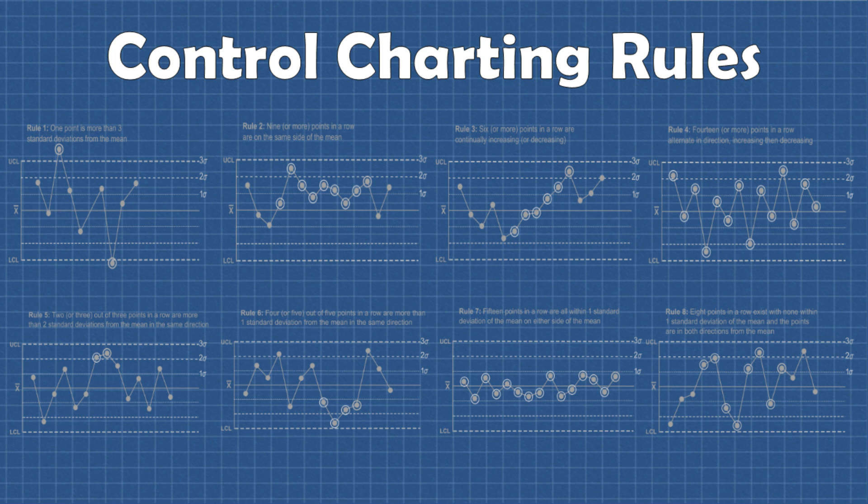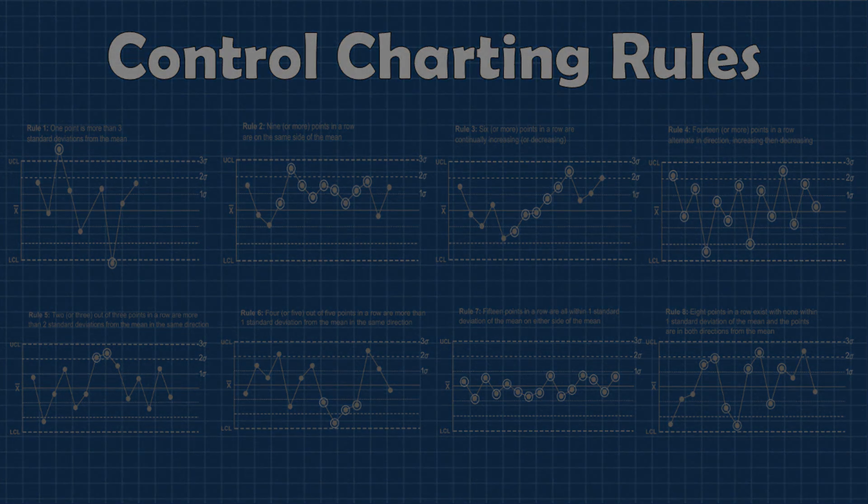Luckily these rules aren't just made up or arbitrary. Each rule detects a phenomena in the data that would be statistically unlikely to happen if all the variation in the process were normal or just random. So with that let's dive into the rules and see what they tell us.